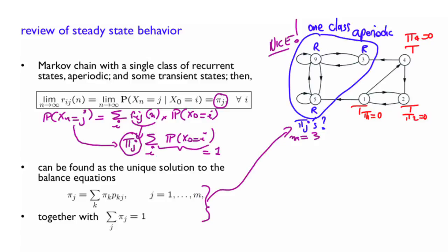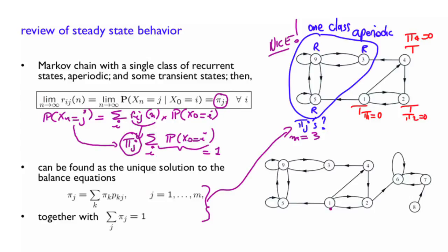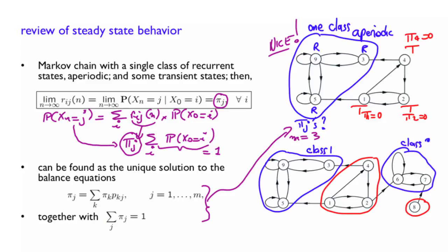Consider this chain. It is an expanded version of the previous one with additional states. Some of these are recurrent and one is transient. But now we have two recurrent classes. And that was our one class, so class 1. And now we have a second recurrent class, class 2.